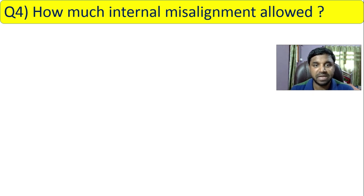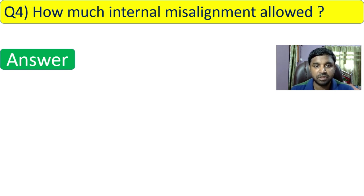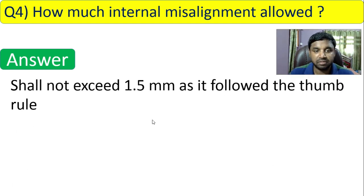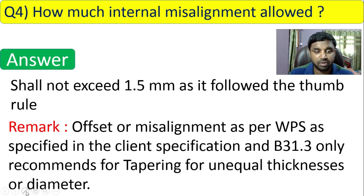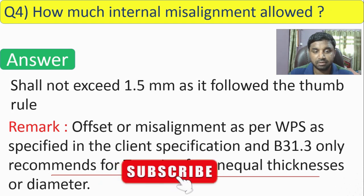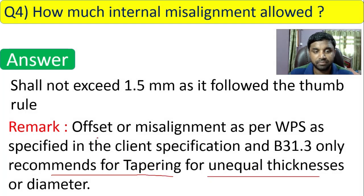Question 4: how much internal misalignment is allowed? This is a confusing question — B31.3 does not specifically mention internal misalignment. The thumb rule is it shall not exceed 1.5 mm. However, always check your WPS and client specification for the offset or misalignment requirement. B31.3 only mentions tapering for unequal thickness or diameter.